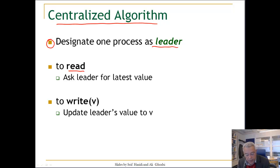To read, a node will ask the leader for the latest value. It sends a request to the leader and gets back the latest value. To write, we send a request to the leader, and the leader updates the value. The value of this register is at the site of the leader.